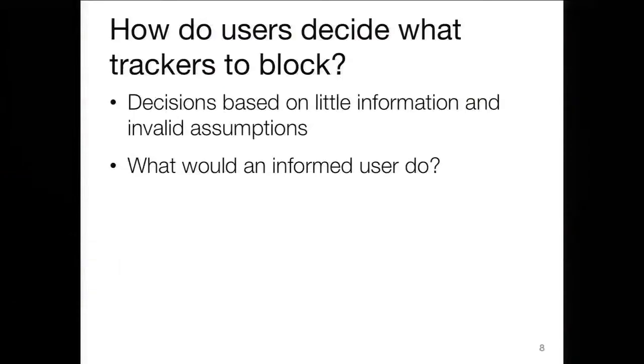We've been looking at what users actually do when they decide which trackers to block. The first problem is that right now users have so little information that they're making decisions on faulty assumptions. What's really more interesting is not what users are doing today, but what a truly informed user would do — if users actually understood what was going on, how would they make these decisions?